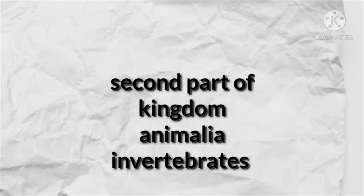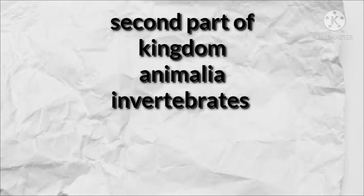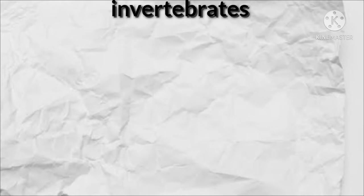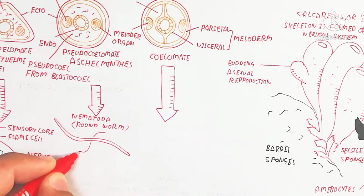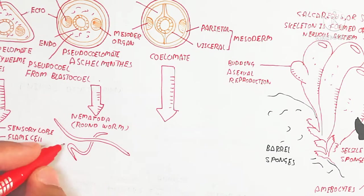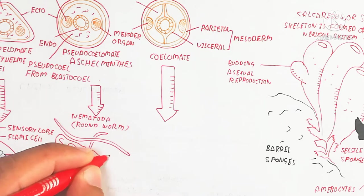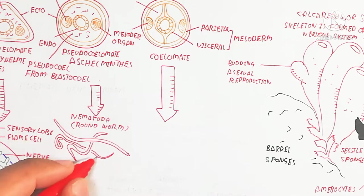Today we will discuss the second part of Kingdom Animalia invertebrates. The first video link is provided in the description box. Here we will discuss the nematodes. In the previous video we had discussed about phylum Porifera and Cnidaria, so here we will discuss further. The nematode is a roundworm.